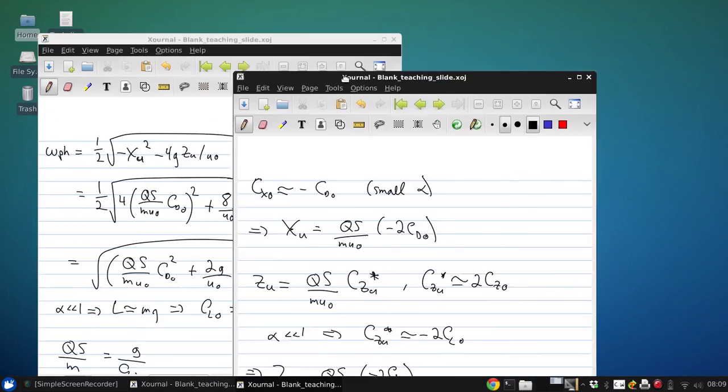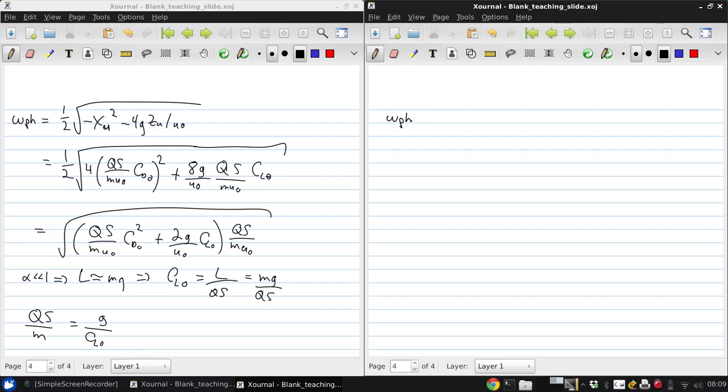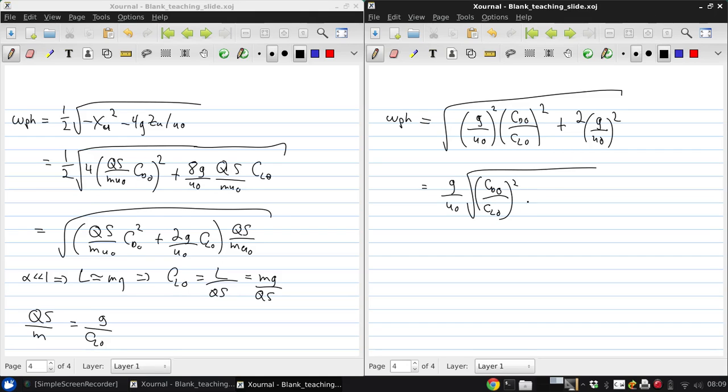And using that, we can then write that the Fugoid frequency is g over u-naught squared times CD naught over CL naught squared plus 2g over u-naught squared, all square root. So we can factor out g over u-naught, and we're left with the square root of CD naught over CL naught squared plus 2.